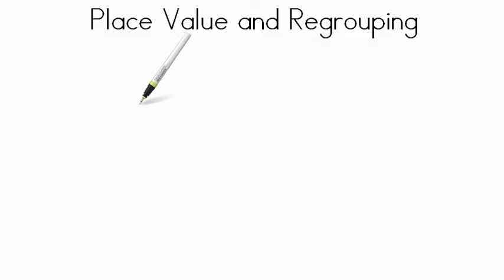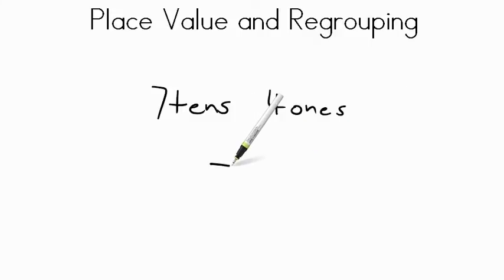Great job. Let's try another. What would the value of 7 tens and 4 ones be? If you said 74, pat yourself on the back. Did we need to regroup? No, we didn't. We just had to combine the two numbers. So 7 tens is the same as 70 and 4 ones is the same as 4, 70 and 4 make 74. Nice job.